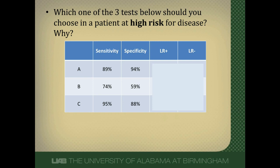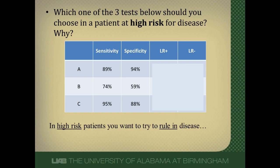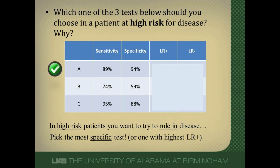Second question: which of these three tests would you use for a patient who is at high pretest probability for having this disease? Pause the video, choose one, and think about your rationale. The answer is Test A. When a patient is at high risk, we want to rule in disease, so we pick a specific test or the one with the highest positive likelihood ratio. Test A has a 94% specificity and also has the highest positive likelihood ratio. To rule in disease, think SPIN. To rule out disease, think SNOUT.